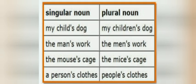The men's work — man means one person, men's means many. The mice's cage: in singular sense, the mouse's cage; in plural form, the mice's cage. In singular form, a person's clothes; in plural form, people's clothes. Person means a single person, people means many people, so people's clothes.